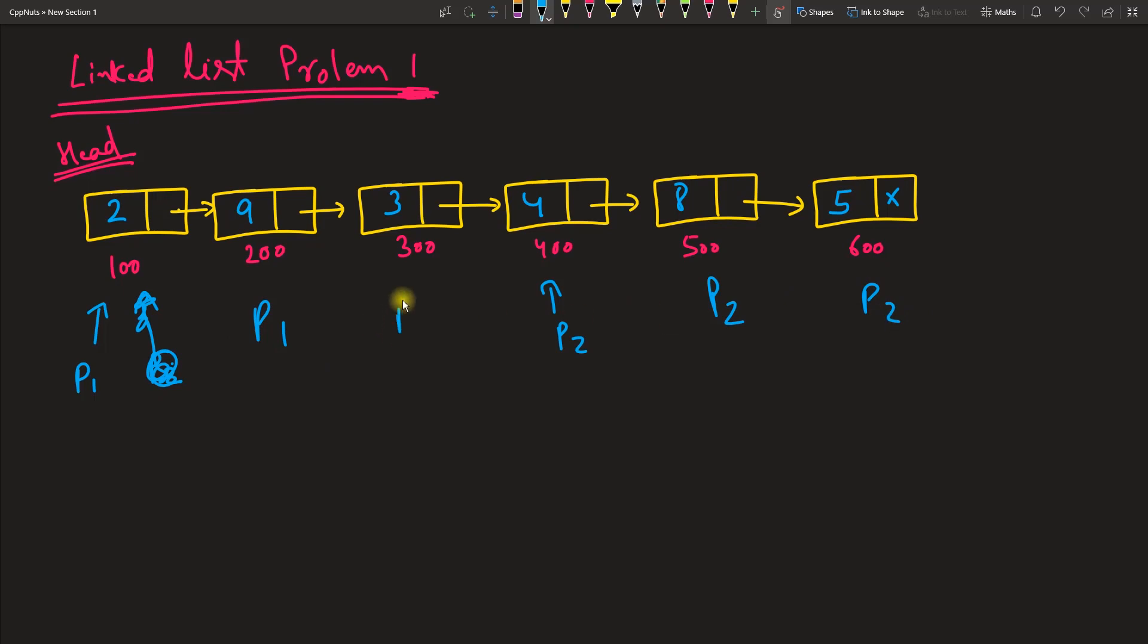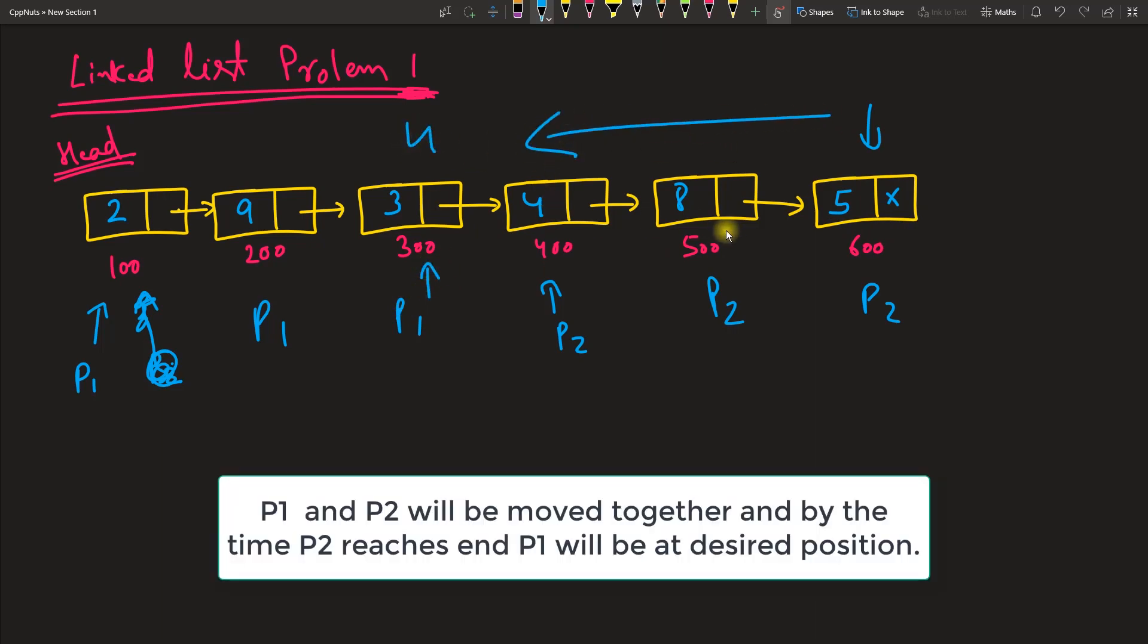Once p2 is reaching the end—because you will know that this node is the end because there is nothing in the next—by the time you reach here, p1 is actually pointing to the fourth element from the back. So this is how you solve this problem.